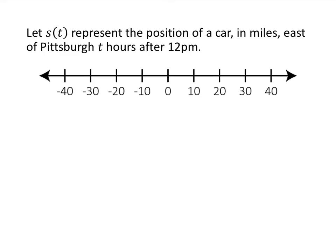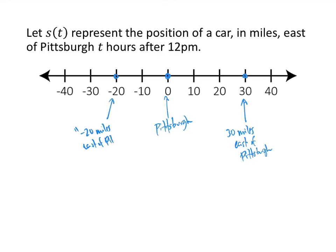If we're talking about distance in miles east of Pittsburgh, one important thing to notice is that if we were at position 0 then that represents Pittsburgh — if I am 0 miles east of Pittsburgh then I'm in Pittsburgh. If I'm over here at say 30 on the number line, that represents a point that is 30 miles east of Pittsburgh. And if I'm over here at negative 20, nobody really talks like that. Instead what we say is 20 miles west of Pittsburgh. So a negative position simply means you're on the other side of your starting point — positive means east, negative means west.